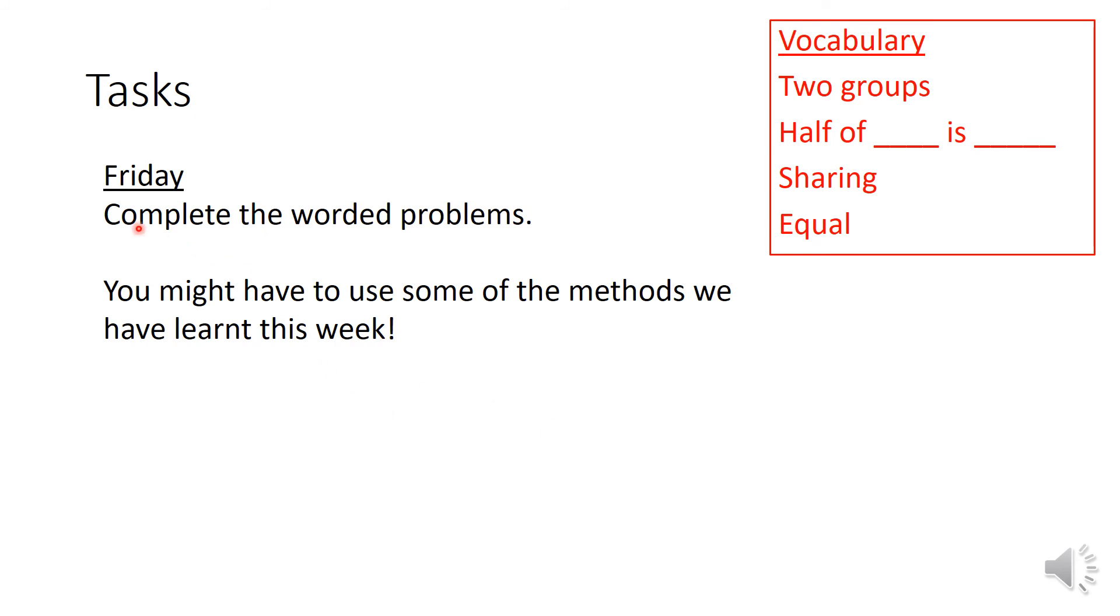So today's task is to complete the worded problems on the sheet. You might need an adult to help read them out for you, but you should try your best to have a go at working it out independently, so on your own. Now, remember, you might have to use some of the methods that we have learnt this week. So that is using our real life objects and separating them physically into two groups or using our part part whole. And at the top, I've kept that vocabulary box. So two groups, half of is that we're sharing and it has to be equal.